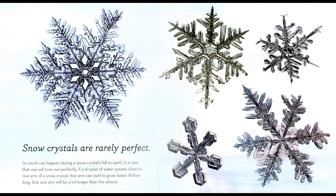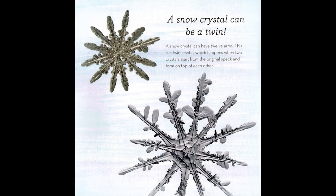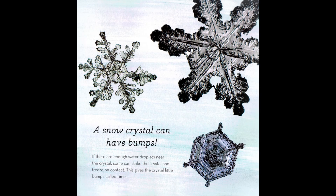Snow crystals are rarely perfect. So much can happen during a snow crystal's fall to earth that it is rare that one will turn out perfectly. If a droplet of water passes close to one arm of a snow crystal, that arm can start to grow faster, and before long that one arm will be a lot longer than the others. A snow crystal can be a twin — it can have twelve arms. This happens when two crystals start from the original speck and form on top of each other. If there are enough water droplets near the crystal, some can strike the crystal and freeze on contact, giving the crystal little bumps called rime.